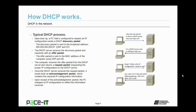Once the computer receives that offer packet from the DHCP server, if it's going to use that DHCP server, it returns a request packet — requesting the proper IP configuration from that specific DHCP server. Once the DHCP server receives the request packet, it sends back an acknowledgement packet. This acknowledgement packet contains all of the required IP configuration information. Once the PC receives the acknowledgement packet, the PC changes its IP configuration to reflect the information received from the DHCP server. And that's the typical DHCP process in a nutshell.